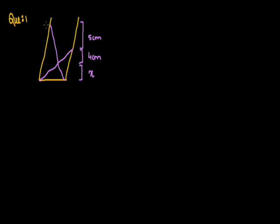For solving this problem, first of all we mark the points to be A, B, C, D, and E. Now we draw a line OP which is parallel to the ground and passes through E. We are going to use the concepts of similarity for solving this question.